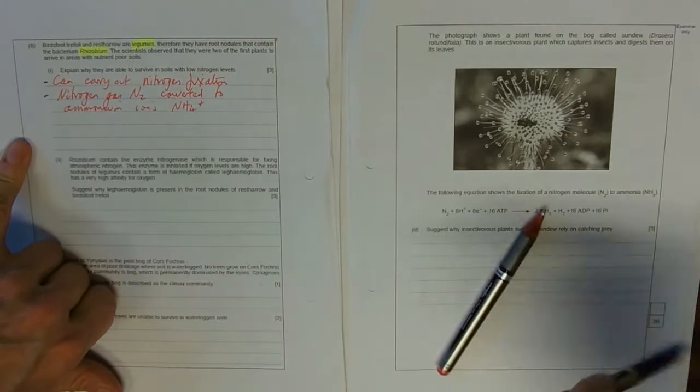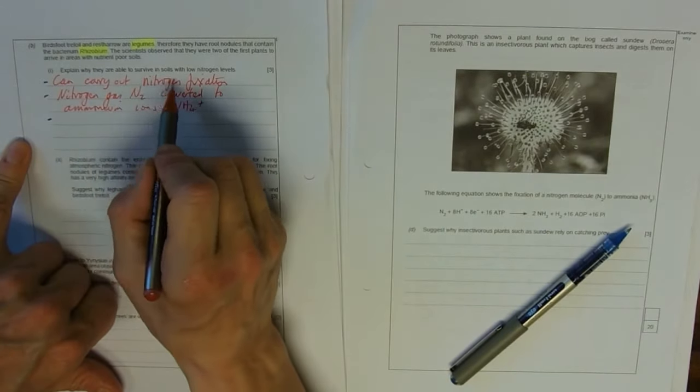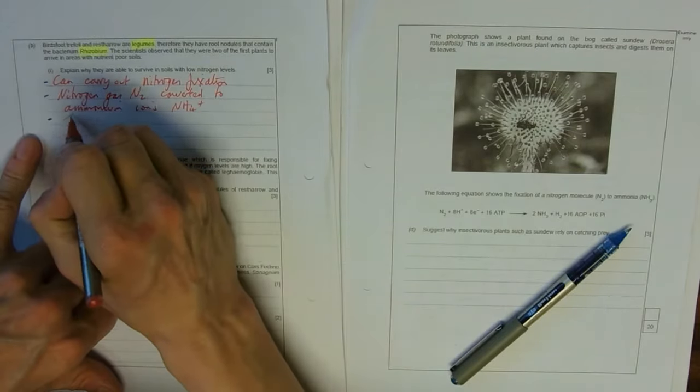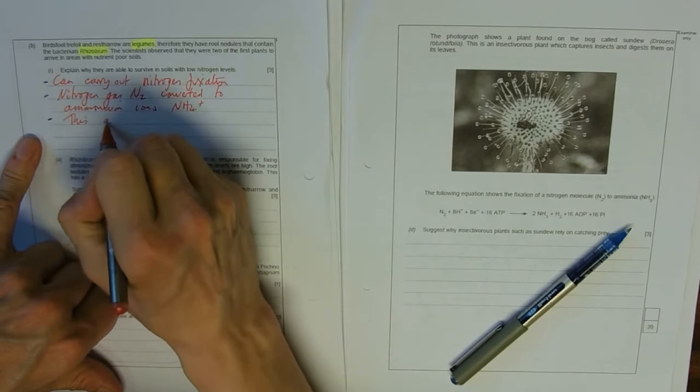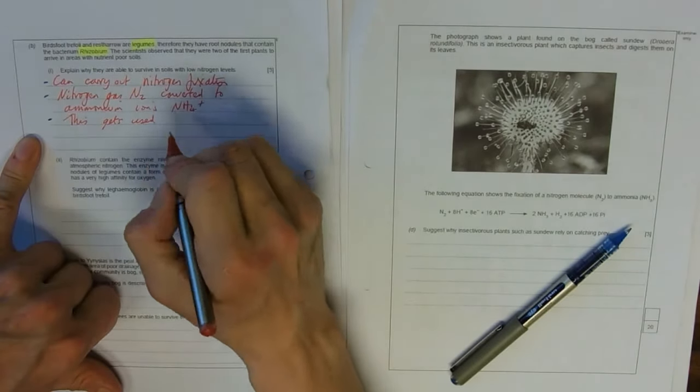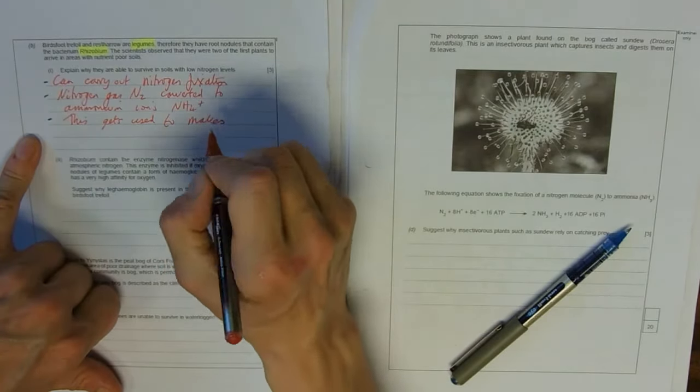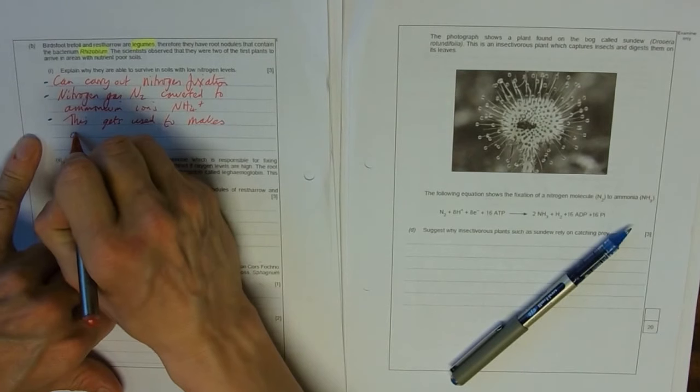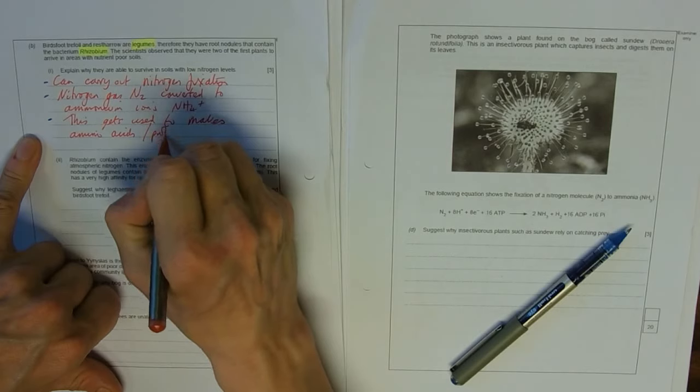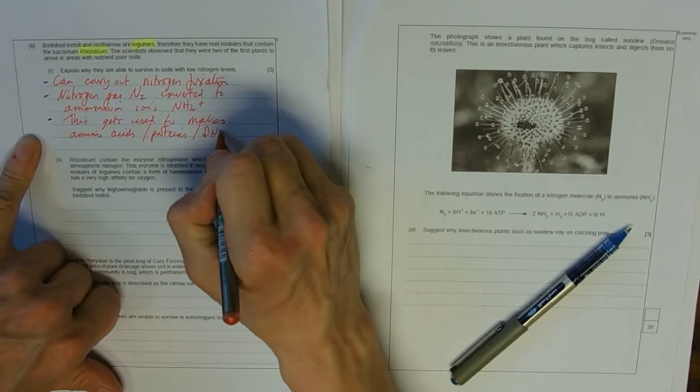And that's two marks, but we haven't actually answered the question yet really, which is why they're able to survive these plants. What are they going to do with this? Well, this ammonium gets used, why, what for, to make anything containing nitrogen. So makes, the most obvious one might be amino acids, we could say proteins, but also anything else containing nitrogen. Things like nucleic acids, like DNA.